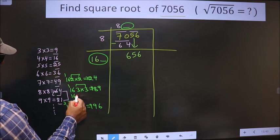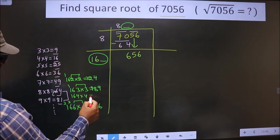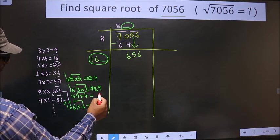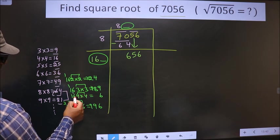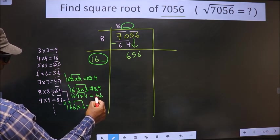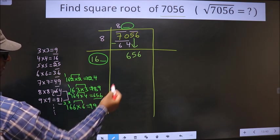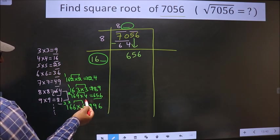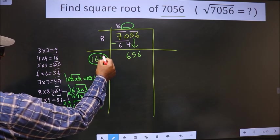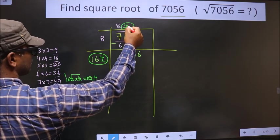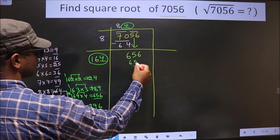So you take 4 here. Now 4 into 4 is 16. 4, 6, 24 plus 1 is 25. 4 once 4, 5, 6. So we got exact 656 for the number 4. So here you write 4, here also 4, and here 656.